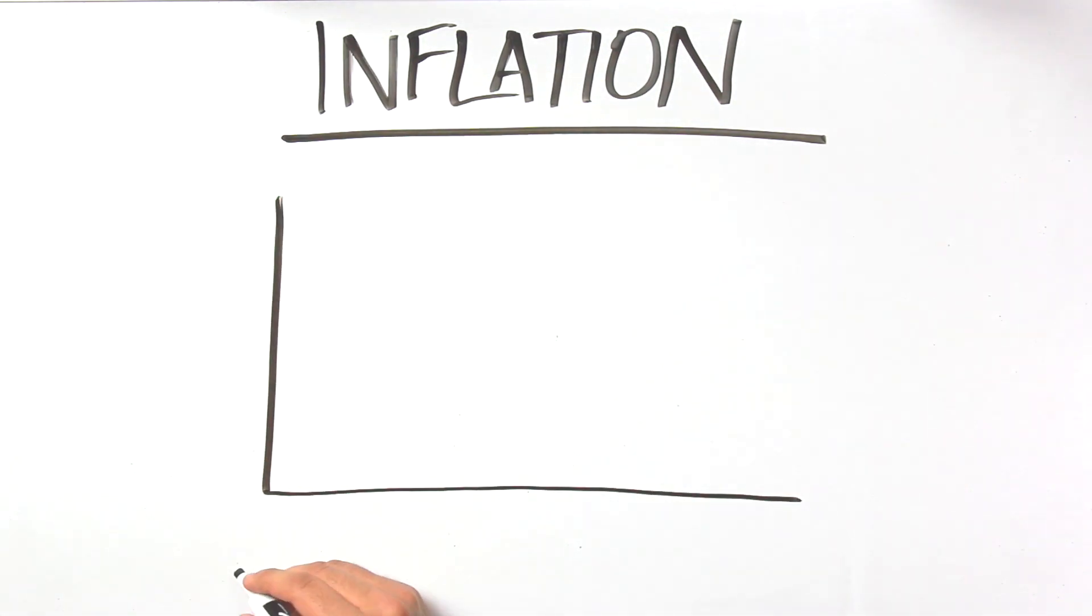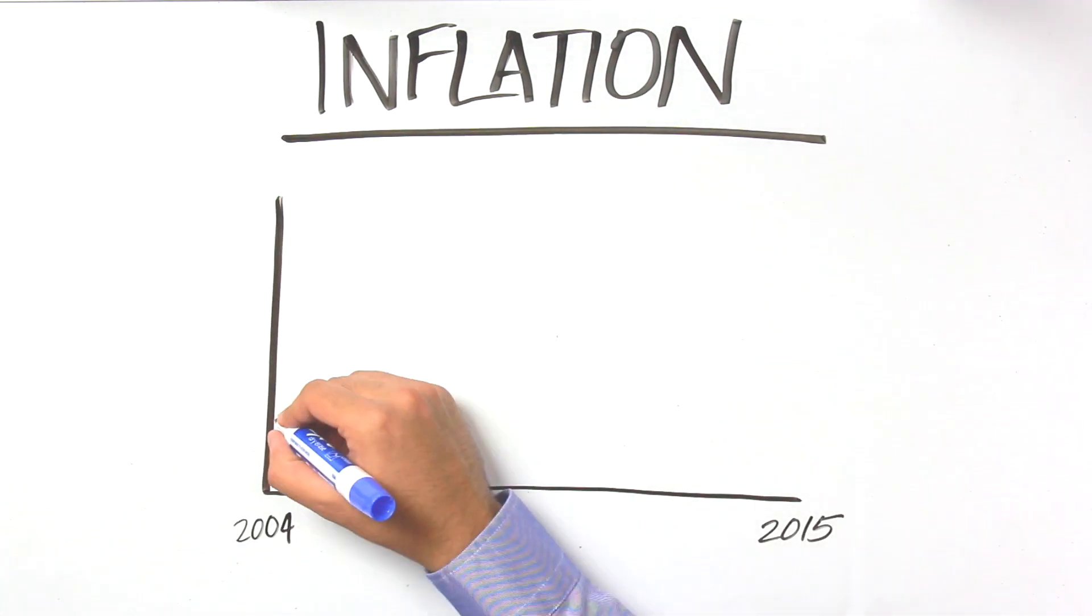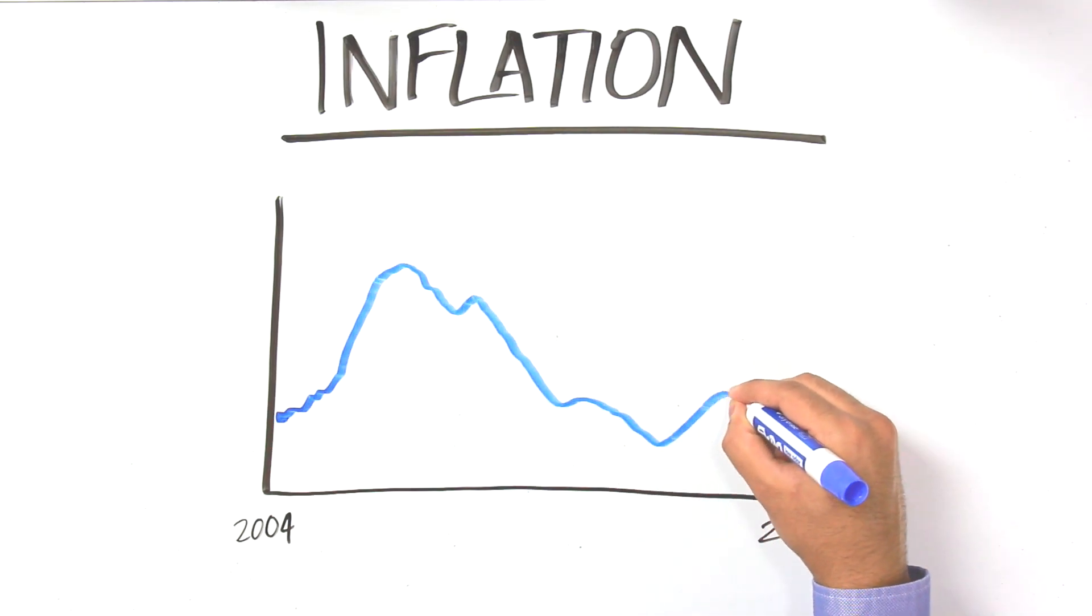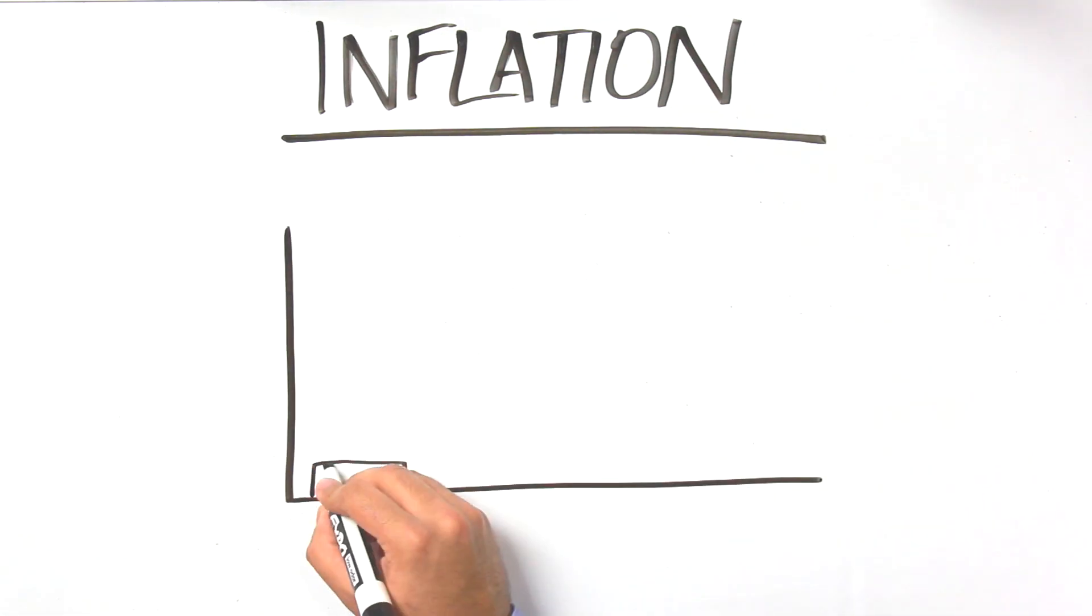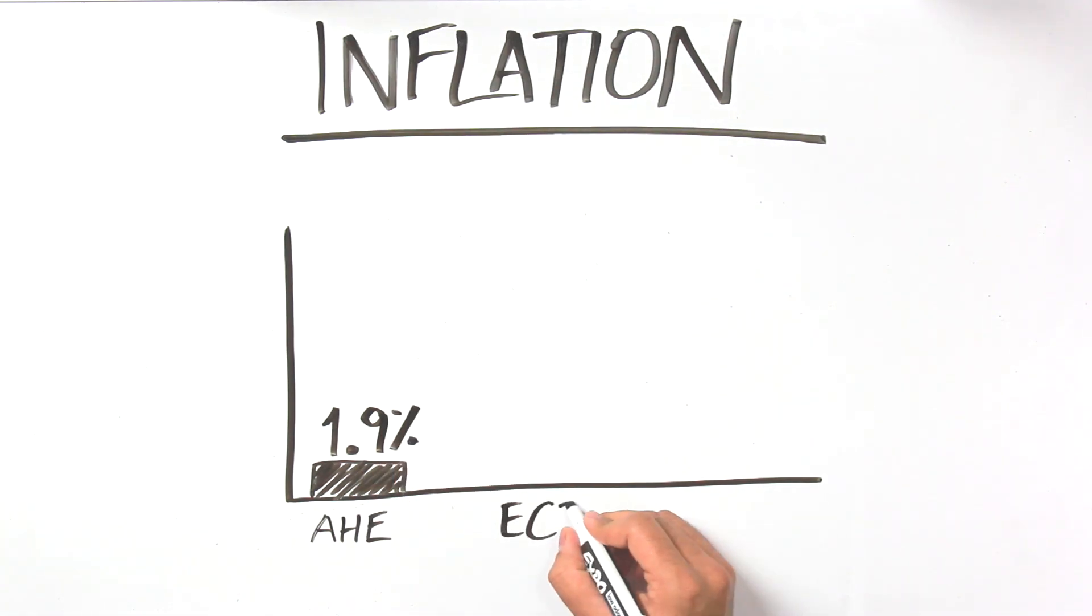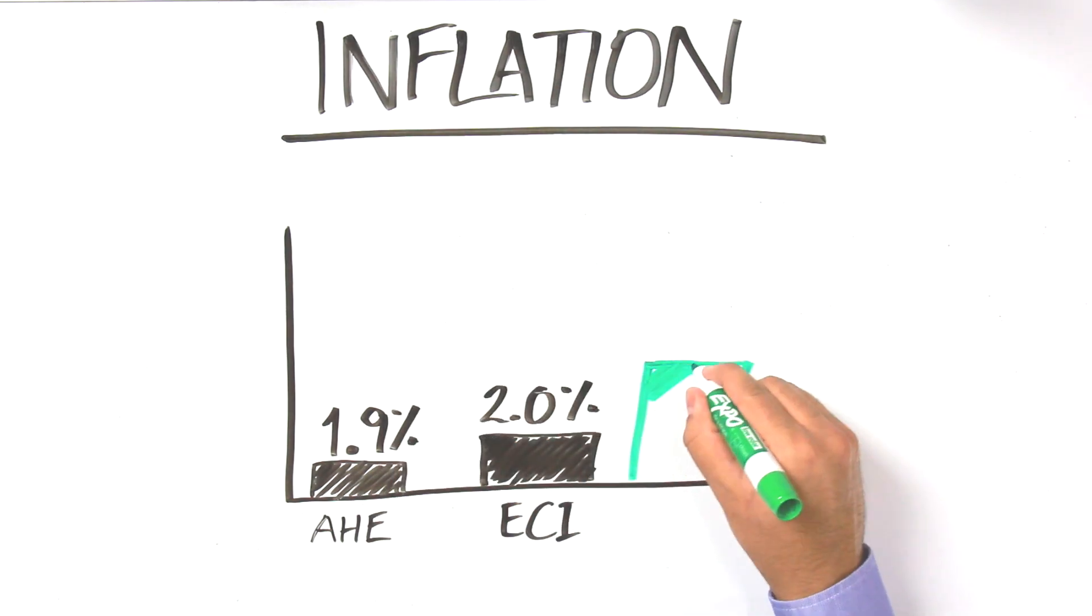If Janet Yellen is looking at average hourly earnings, then yes, they are low at 1.9%. But don't forget that in 2004, when the Fed hiked, average hourly earnings were at the same level. Other measures of wage growth are closer to 3%, including our favorite measure, median hourly earnings.